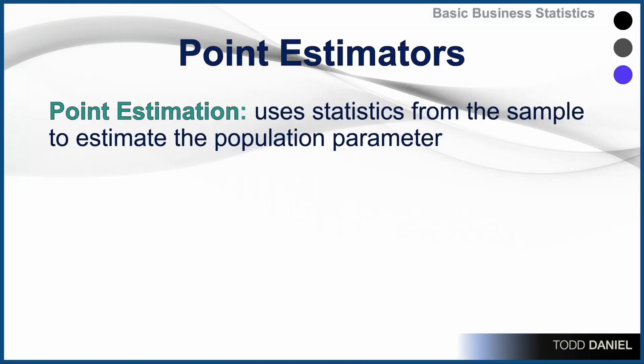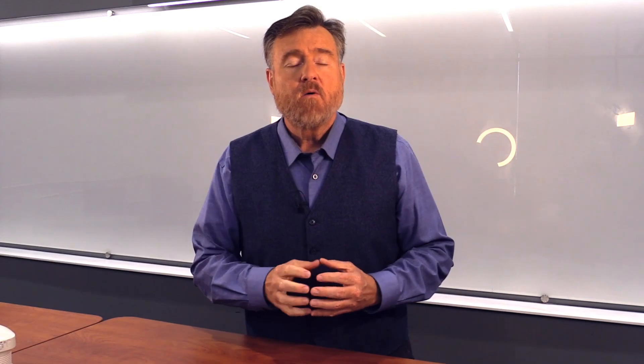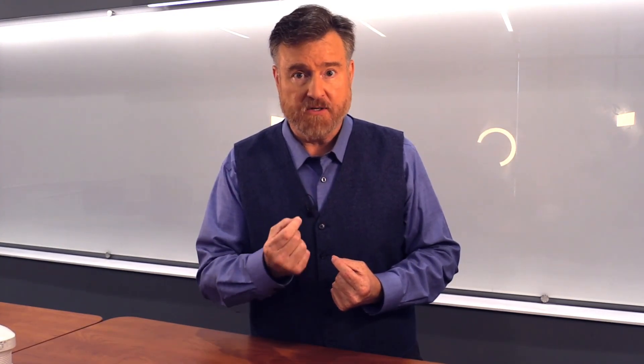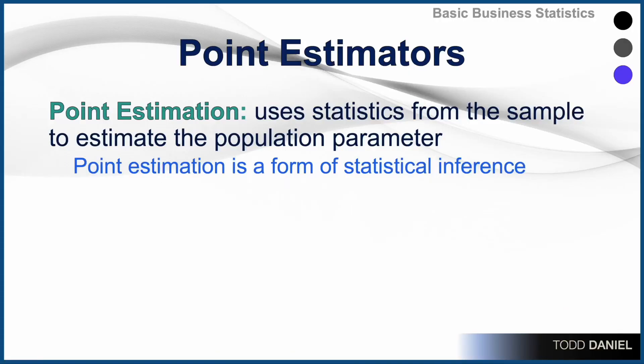Let's start with point estimators. Point estimation uses statistics from the sample to estimate a population parameter. Remember that the mean of a sample is a statistic, but the mean of a population is a parameter. We can use the sample statistic to estimate the population parameter. Point estimation is a form of statistical inference, and the point estimators will have an analog with a population value.